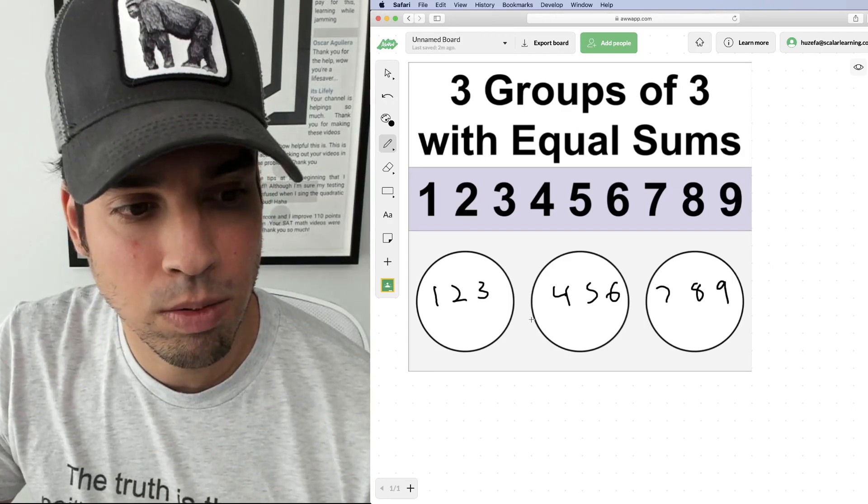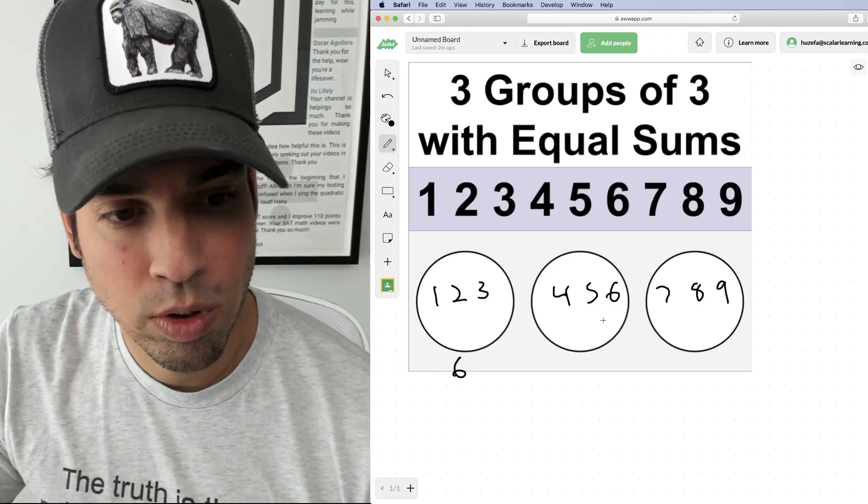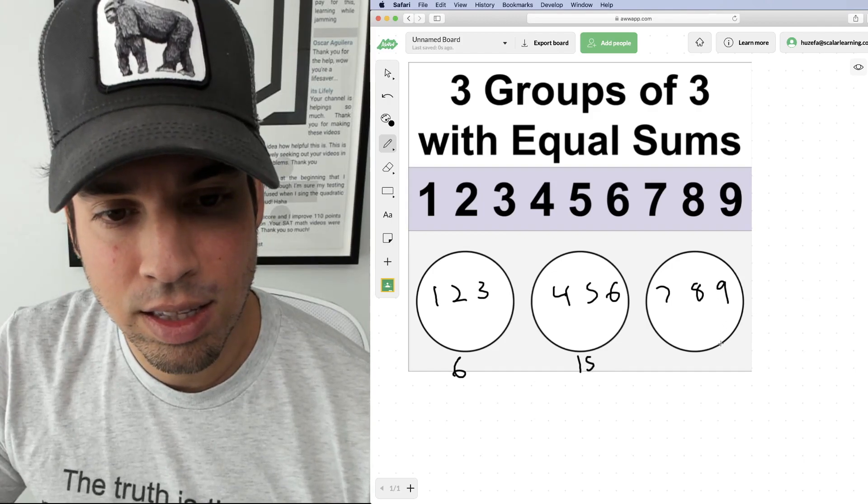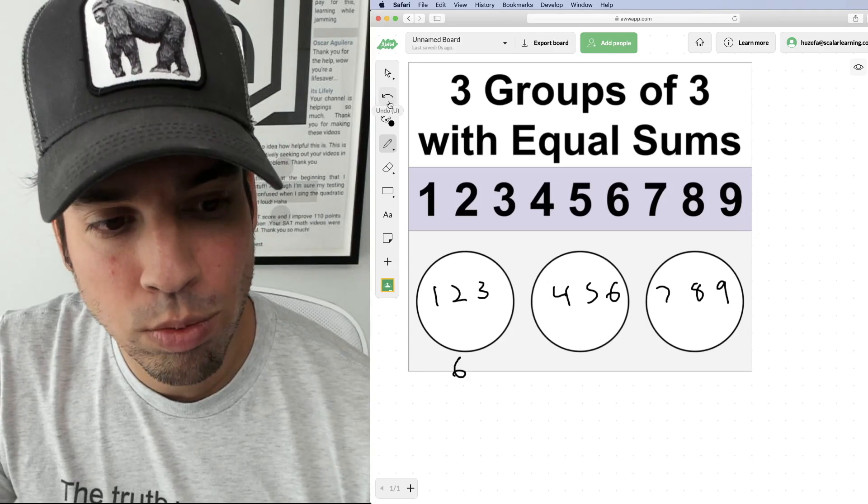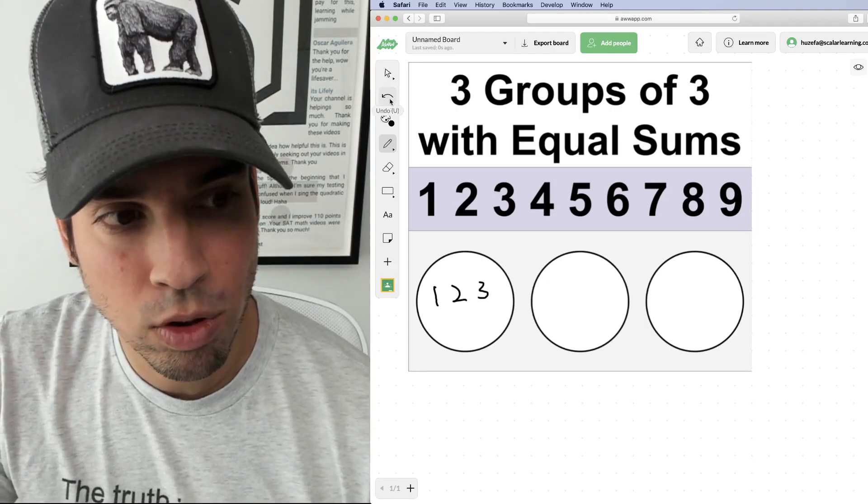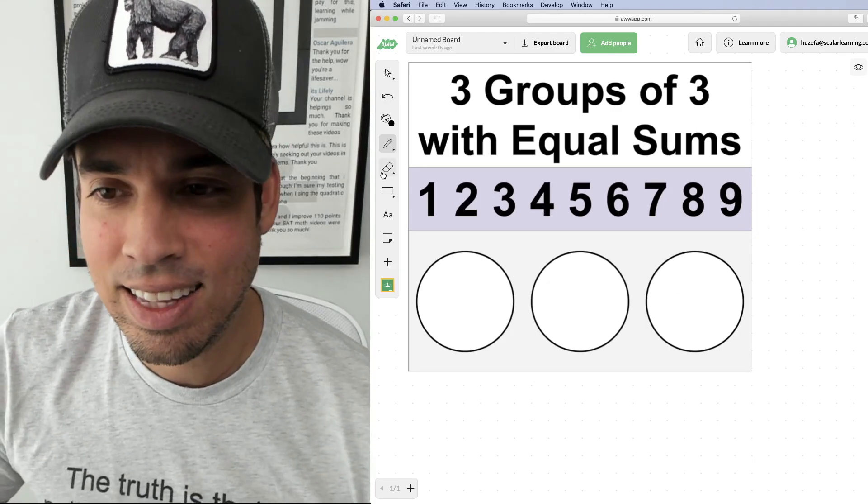But the problem is they wouldn't have the same sum. This would have a sum of six, this would have a sum of 15, and this one would have a sum of 24. So the key is we want to break it up into groups where the sum of the three numbers in each group is identical.